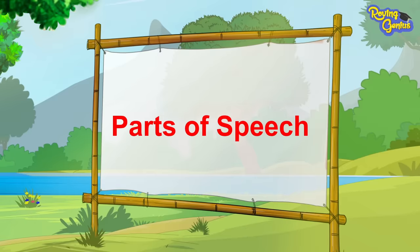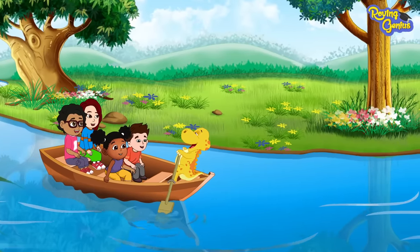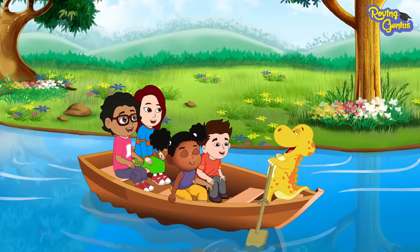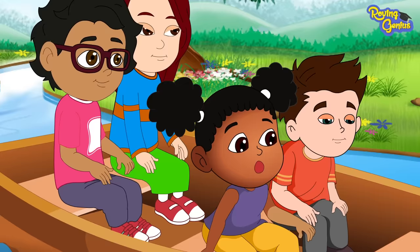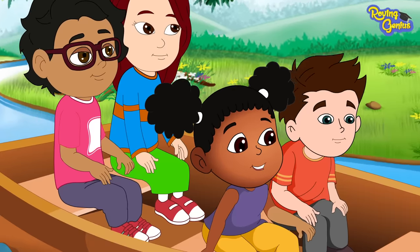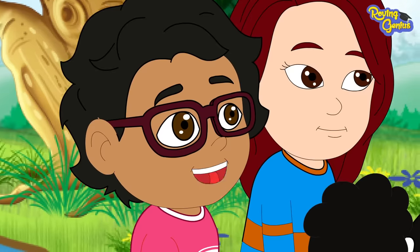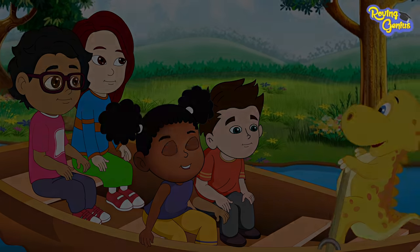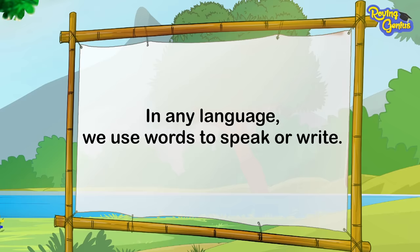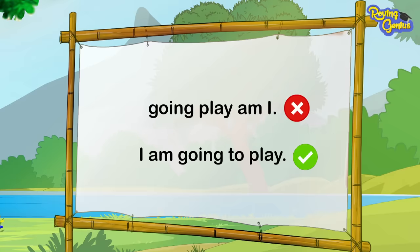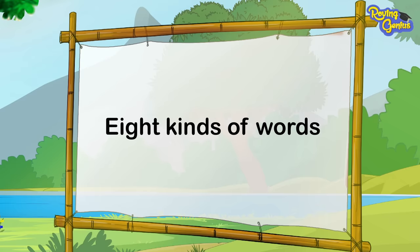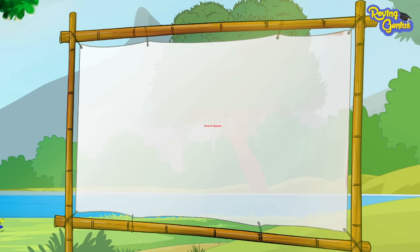Parts of Speech. Hey Elvis, I was wondering how do we know that we are using the correct words for someone to understand? Yes, we also want to know about this. Can you please explain this to us, Elvis? Sure, why not? In any language, we use words to speak or write. We arrange the words in a proper way to make a sentence so that other people understand. In English language, there are eight kinds of words. All of these words have been given a name. Together, they are called Parts of Speech.